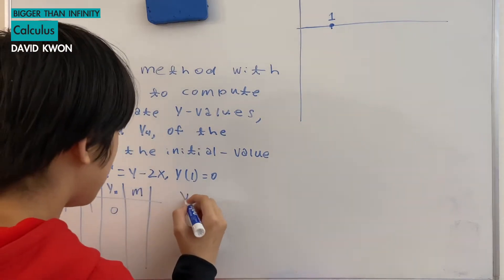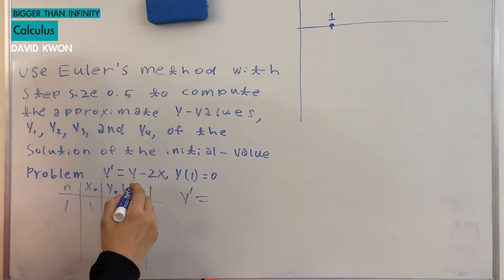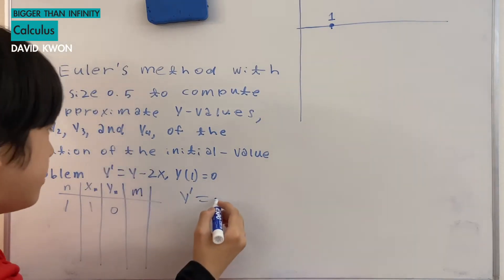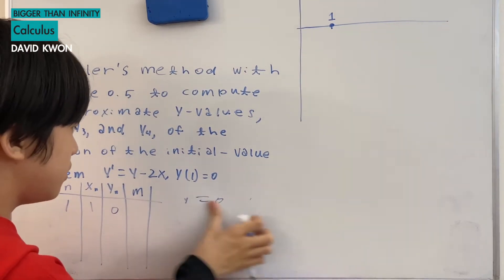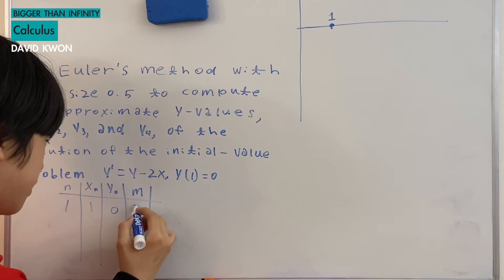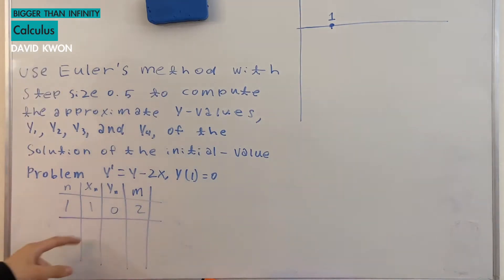If we do that we get y prime is equal to, putting 0 into there we get 0 and a minus 2. So the slope is equal to negative 2.